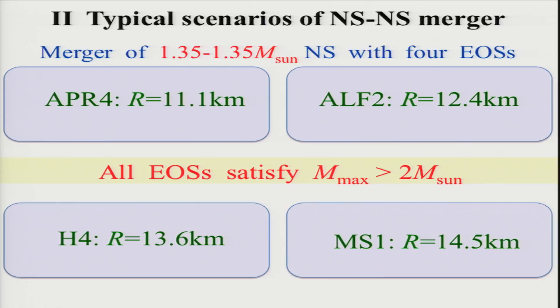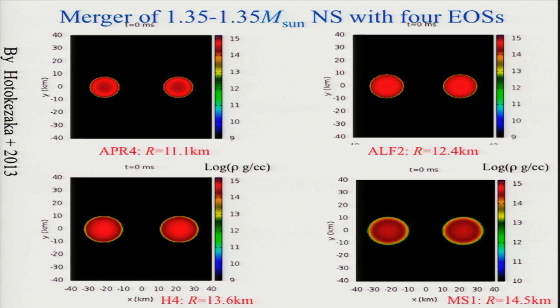From now I'd like to talk about the typical scenario based on numerical relativity. I'll show you some animations for a neutron star merger. For four cases shown, the mass of each neutron star is 1.35 solar mass, but the equations of state are different. For one case the radius is 11 kilometers — a relatively small neutron star. For another case, R is about 15 kilometers — a relatively large neutron star. All EOS employed here satisfy the constraint that the maximum mass is larger than two solar masses — a severe constraint from binary pulsar observations.